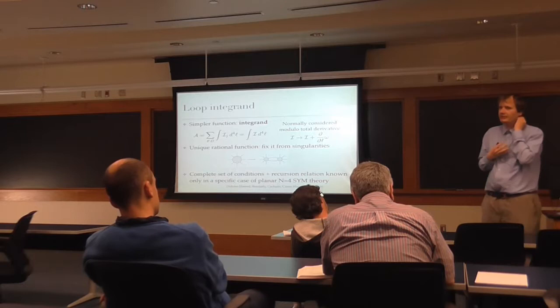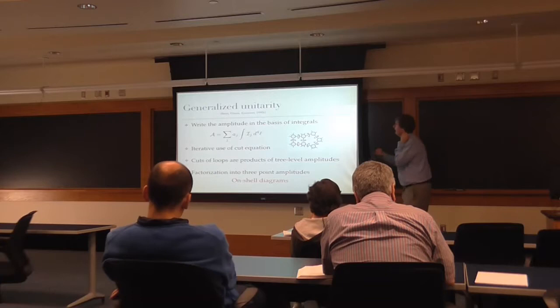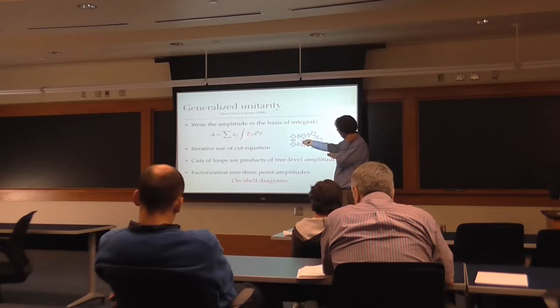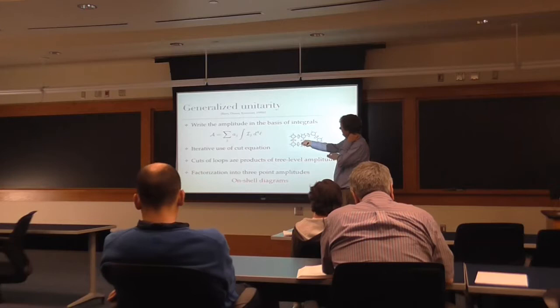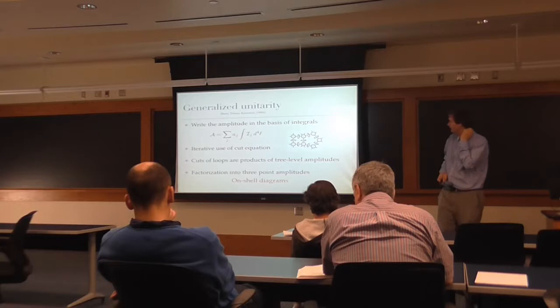People do calculate QCD amplitudes — it's not that they cannot calculate them — but you need to know more than just the simple factorization rule. How people have used the idea of factorization since the early 1990s is as an intermediate step: instead of talking about Feynman diagrams, you write a basis of integrals with unknown coefficients, then impose that the amplitude factorizes correctly on each cut, which fixes the coefficients. This goes under the name of generalized unitarity methods, using the fact that cuts of loop integrals are products of tree-level amplitudes.